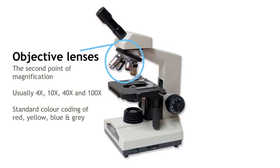The objective lenses. This is the second point of magnification. They revolve around on what is called the nose piece. There are usually 4 objective lenses, colour coded for easy recognition.